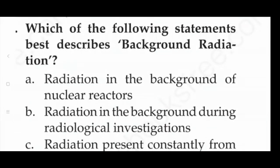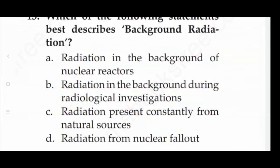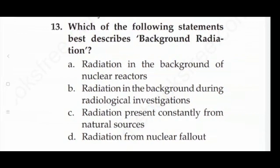Next question: which of the following best describes background radiation — option A: radiation in the background of a nuclear reactor, option B: radiation in the background during radiological investigations, option C: radiation present constantly from natural sources, option D: radiation from nuclear fallout. The answer is option C — radiation present constantly from natural sources.